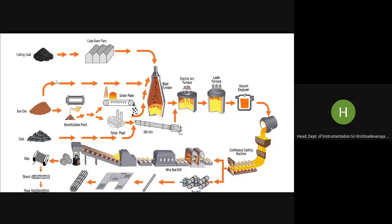Let's start today's session on iron and steel industries and the instrumentation for iron and steel industries. In an integrated steel plant, we have the raw material section. From there, coking coal comes through a coke oven plant to the blast furnace. Iron ore comes on another route to the blast furnace, and coal goes to the pellet plant and then to the sintering plant.